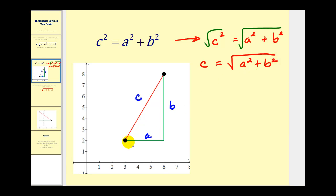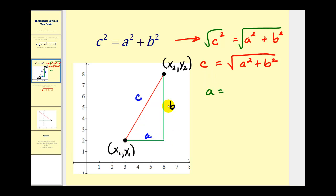Now remember that a is just the length of this leg here, and b is the length of this leg here. If this right triangle is on the coordinate plane, we could call the coordinates of this point x one comma y one, and we could call this point x two comma y two. The length of side a would be determined by the distance between x sub one and x sub two, so a equals x sub two minus x sub one. The length of b would be determined by the y coordinates, which would be y sub two minus y sub one.